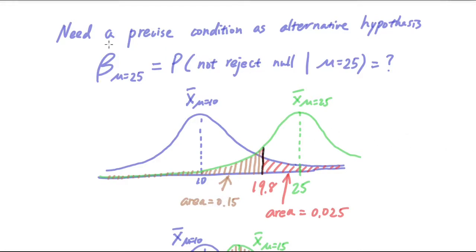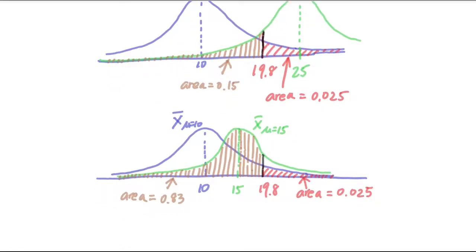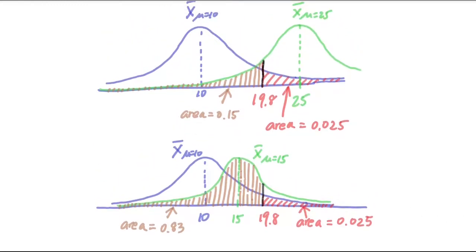So now remember that we said that we had to use a precise condition as an alternative. So we could also ask a very similar question. What is beta under the condition that mu is equal to 15? So that will be described by this graph. We still have the same purple distribution of mu equal to 10, rejecting everything after 19.8, accepting everything smaller than 19.8.